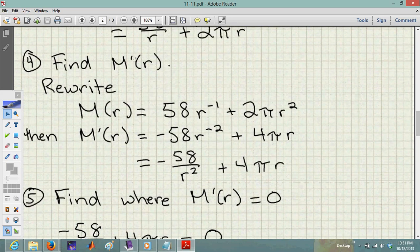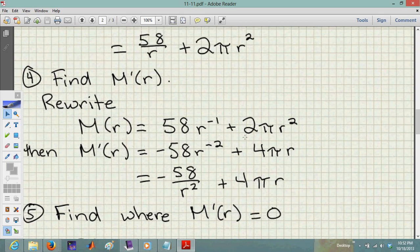We need to find the derivative to optimize this. Rewriting 58/r as 58r⁻¹ makes it easier. The derivative is -58r⁻², because we multiply by the negative exponent and subtract 1 from it (negative 1 minus 1 equals negative 2), plus 4πr. Rewriting gives M'(r) = -58/r² + 4πr.